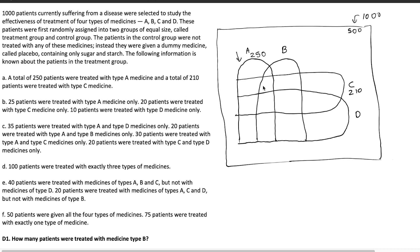From the second point: 25 patients were treated with type A medicine only — we write 25 in the A-only partition. 20 patients treated with type C medicine only — we write 20 in the C-only partition. 10 patients treated with type D medicine only — we write 10 in the D-only partition. 35 patients treated with type A and D only — we write 35 in that partition. 20 patients with type A and B only, 30 patients with type A and C only, and 20 patients with type C and D only — all filled in their respective partitions.